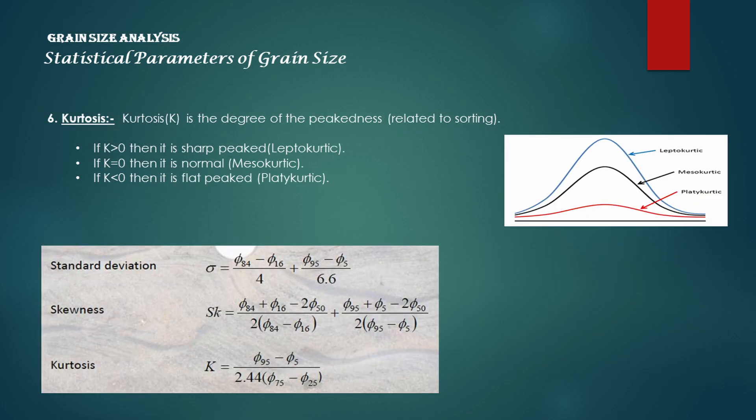Kurtosis is the degree of peakedness, which is related to sorting. If kurtosis is greater than 0, it is sharp-peaked, called leptokurtic. If kurtosis equals 0, it is normal, called mesokurtic. If kurtosis is less than 0, it is flat-peaked, called platykurtic.